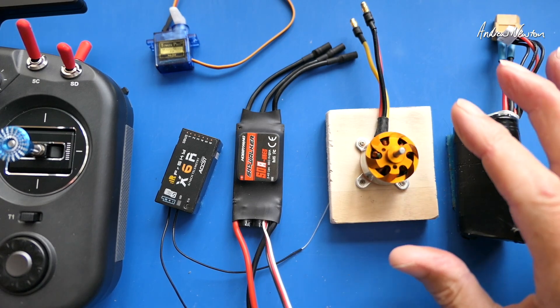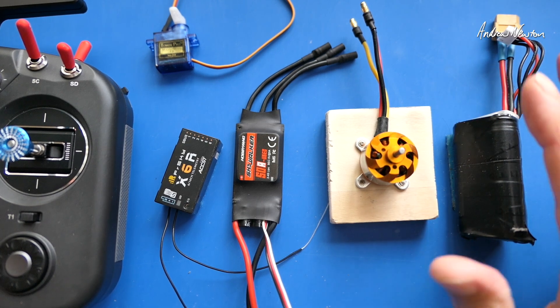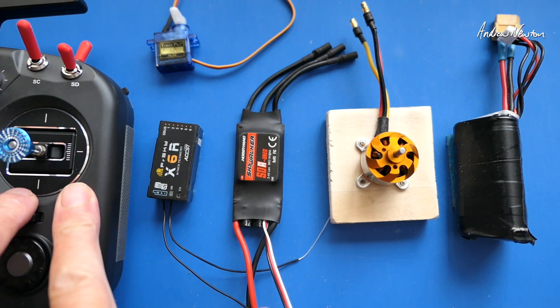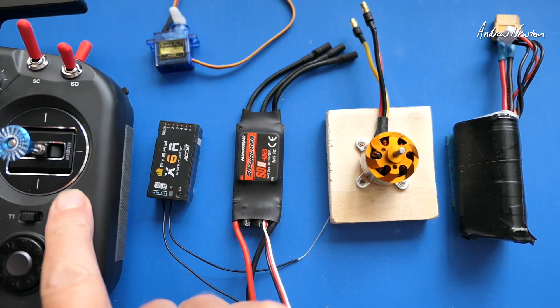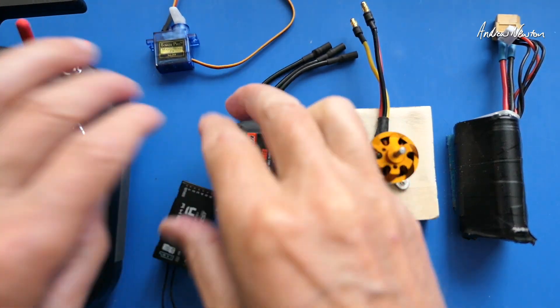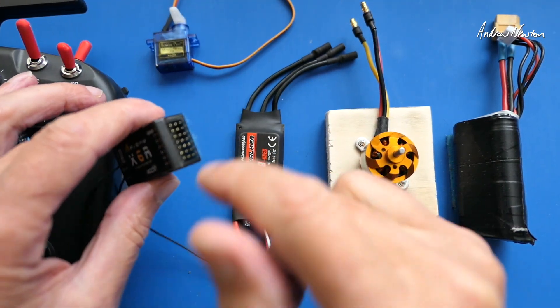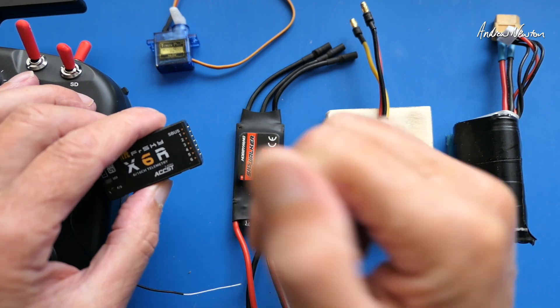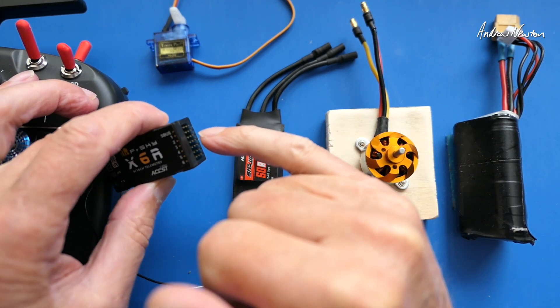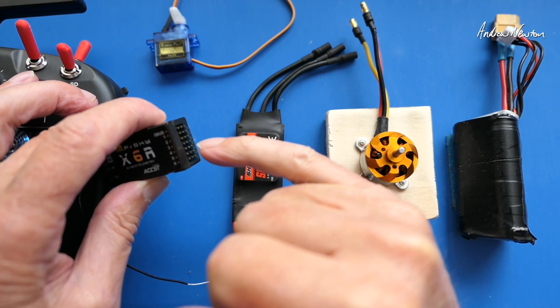So let's start with the basics of RC control so we've got a good overview of what's going on. We have a receiver which is connected and bound to a model in your radio. The radio talks to the receiver and sends signals out to the pins here.